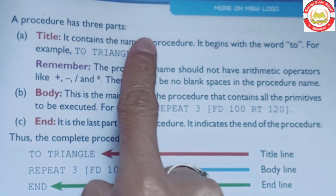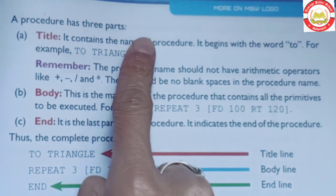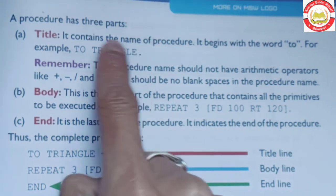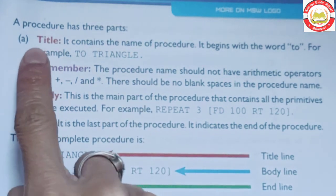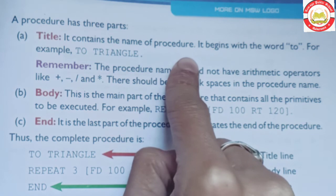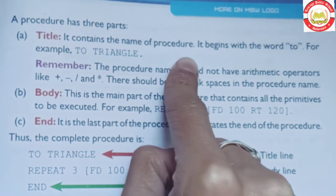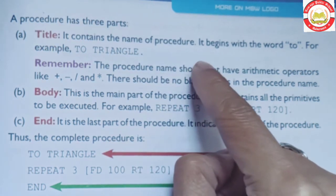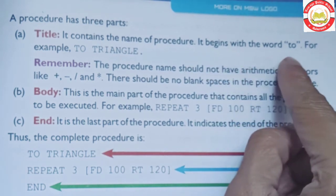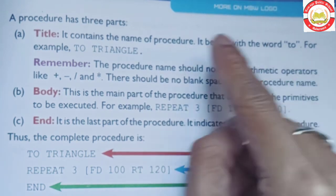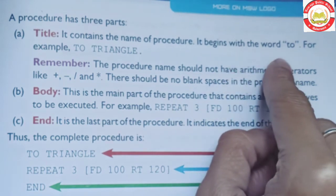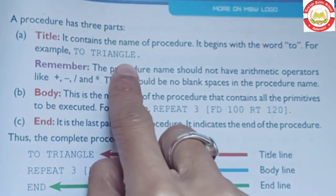A procedure has three parts. First is the Title: it contains the name of the procedure. It begins with the word 'to' — for example, 'to triangle'. Iske shuruat 'to' word se hoti hai, jaise example diya gaya hai: 'to triangle'.